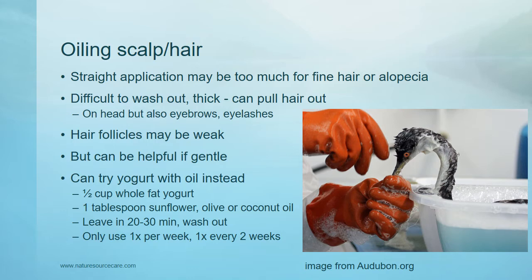I also wanted to mention specifically oiling the scalp and the hair, because this can be a mixed bag. Especially if somebody has fine hair or alopecia, oiling the scalp and hair may be too aggressive and could make things worse. It's difficult to wash out, especially with fine hair or patches of hair, and especially with thicker oils it can pull hair out — not just on your head but also eyebrows and eyelashes. The hair follicles may be weak, typically due to high vata and high pitta conditions, and if you're too aggressive you can pull hair out, which can be counterproductive.